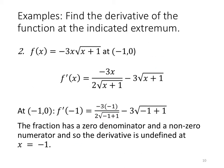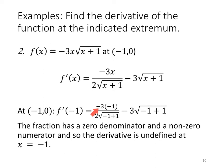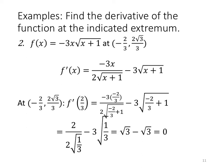Now evaluate. At the point (−1, 0), we want f'(−1): that's −3(−1) / (2√(−1+1)) − 3√(−1+1). This gives 3 / (2√0) − 3·0. We have zero in the denominator and a non-zero numerator, so it's not an indeterminate form — the derivative is undefined at −1. So this is a critical number where the derivative does not exist.